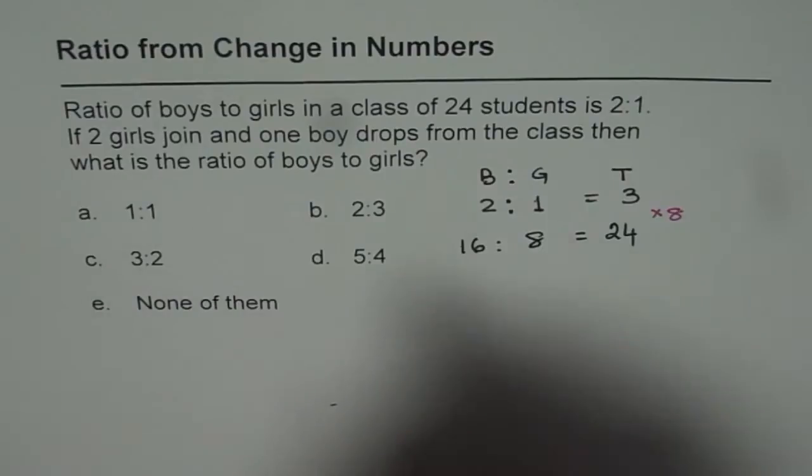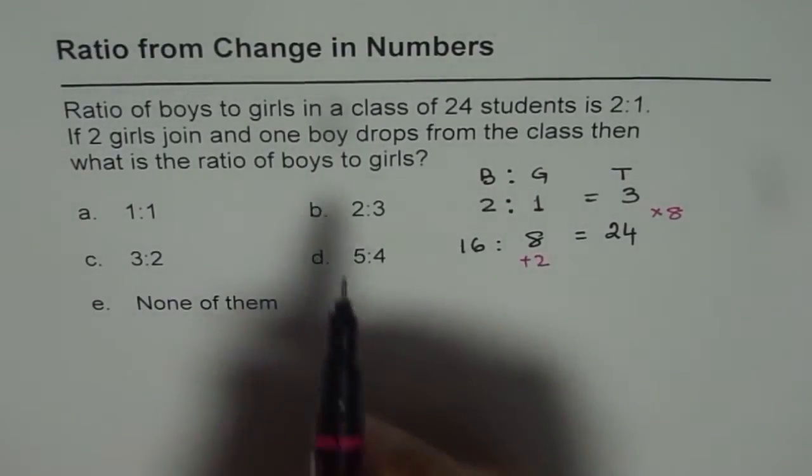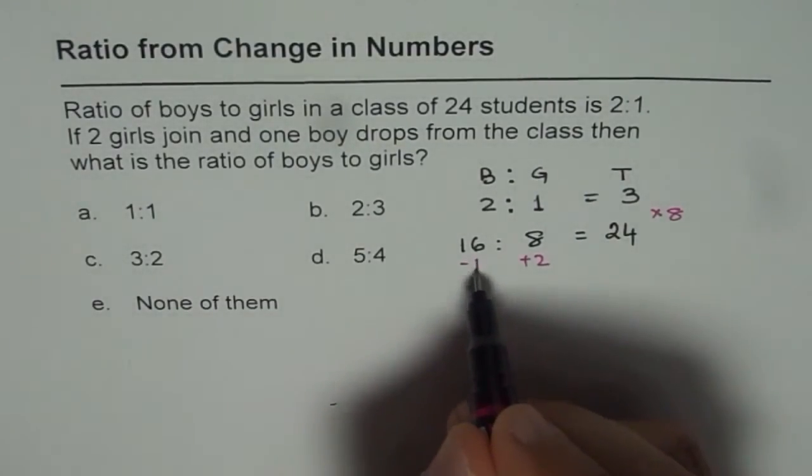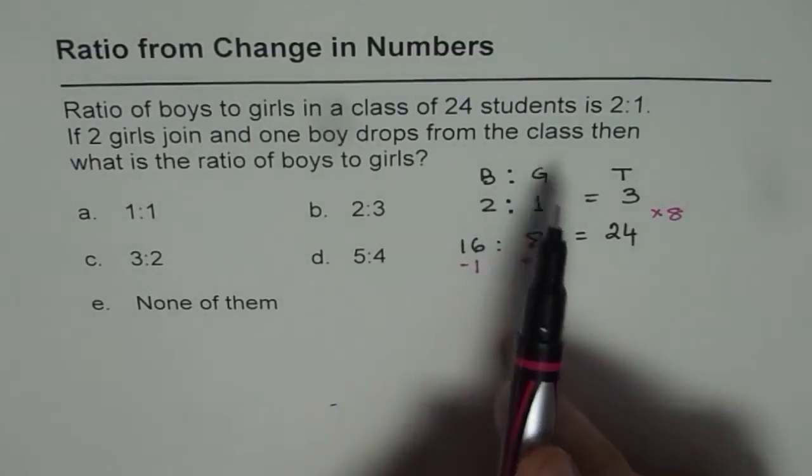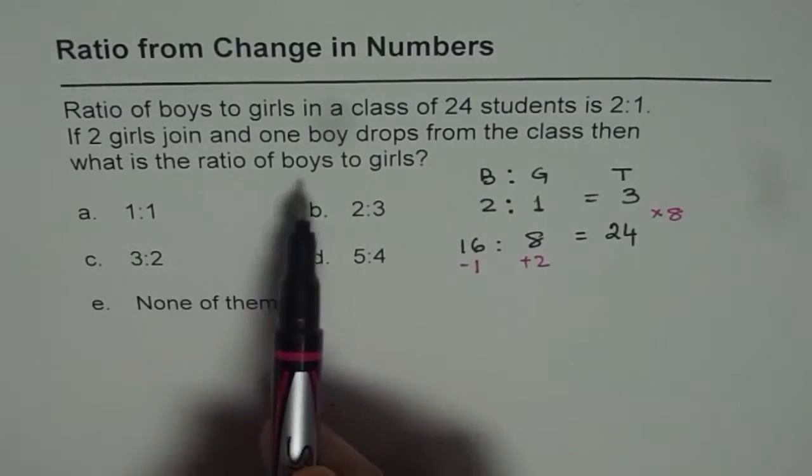If 2 girls join, that means plus 2 here, and 1 boy drops, that means minus 1 here, from the class, then what is the ratio of boys to girls?